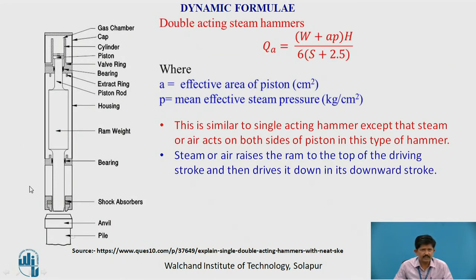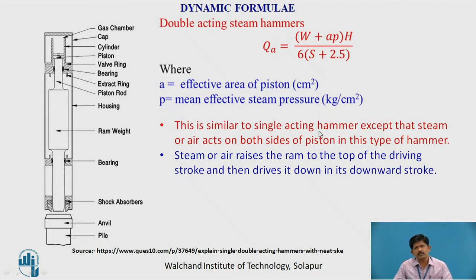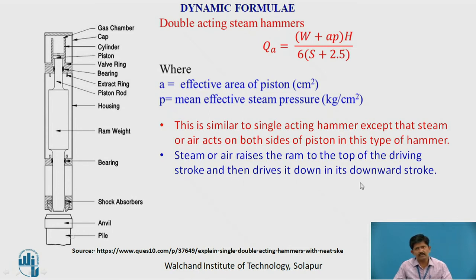For a double-acting steam hammer, the modified formula is: QA = (W + AP)·H / (6·(S + 2.5)), where A is the effective area of the piston and P is the mean effective steam pressure in kg/cm². This type is similar to a single-acting hammer except that steam or air acts on both sides of the piston, raising the hammer on the upstroke and driving it down on the downstroke.